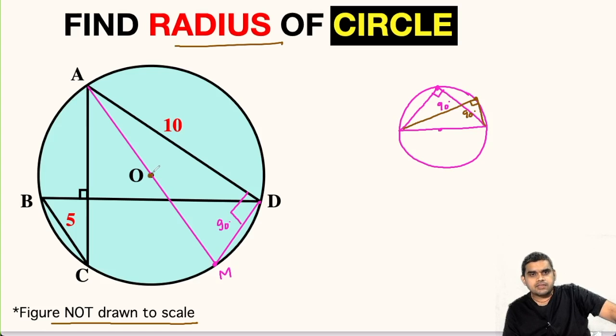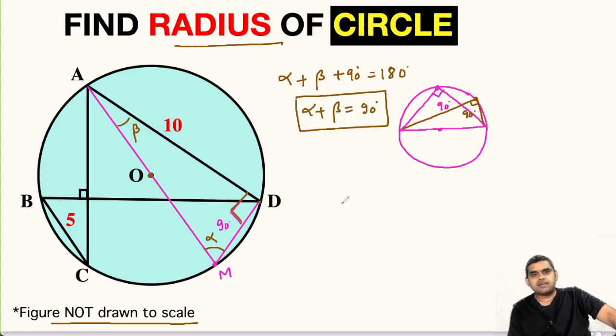So using this theorem, this is the center, AM is the diameter, D is any point on the circumference, so this angle will be 90 degrees. Now let us suppose this angle as alpha and this angle as beta. In triangle ADM, we have alpha, beta, and 90 degrees as three angles. From here we will get a relation that alpha plus beta plus 90 degrees equals 180 degrees. Angle sum property of this triangle. So alpha plus beta will be 180 minus 90, that is 90 degrees.